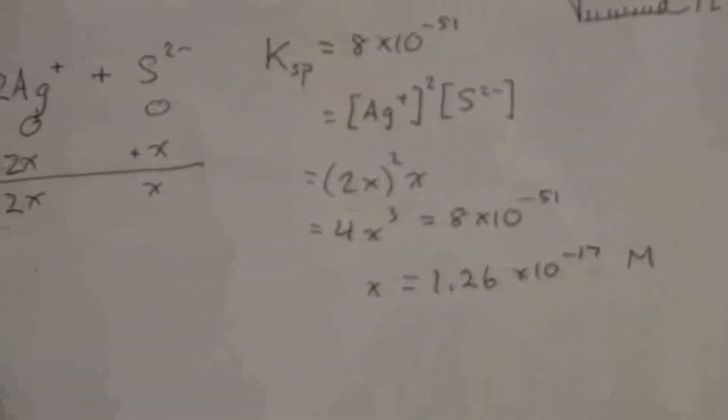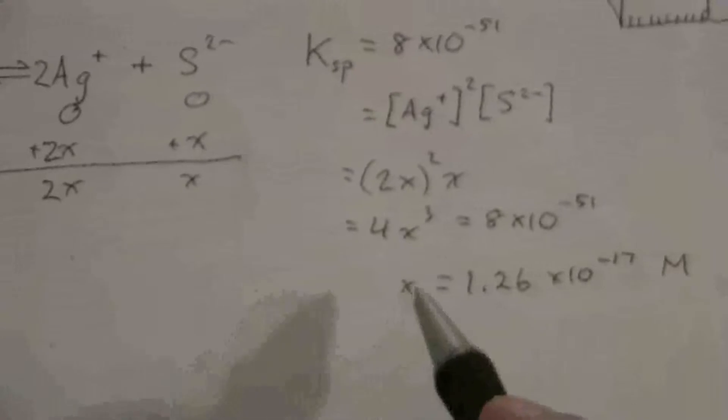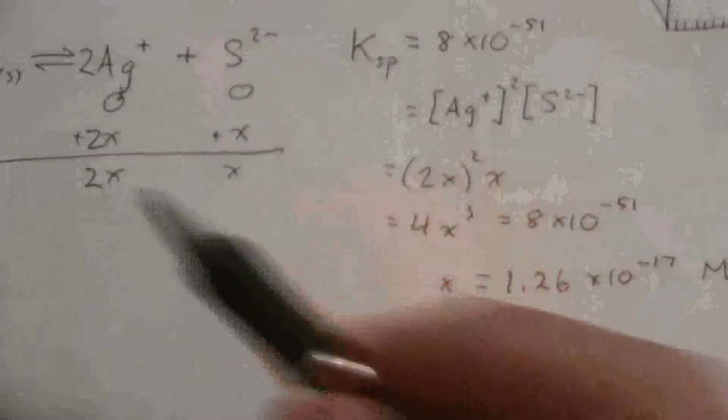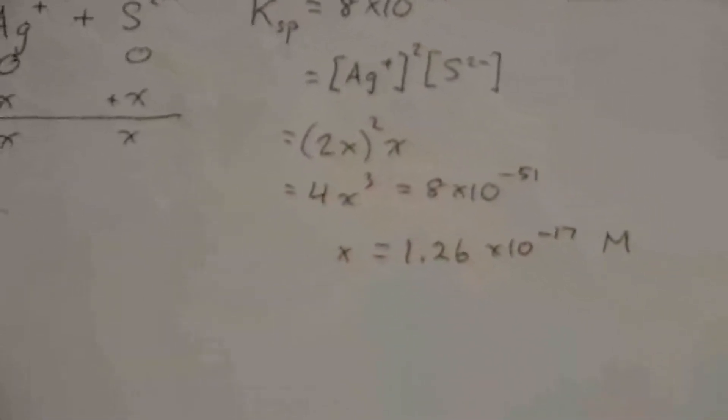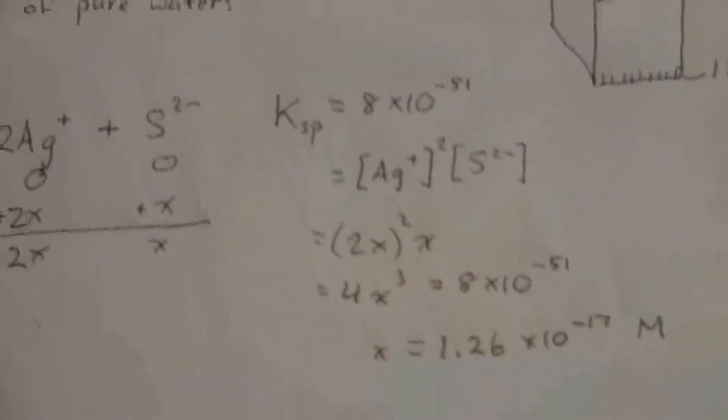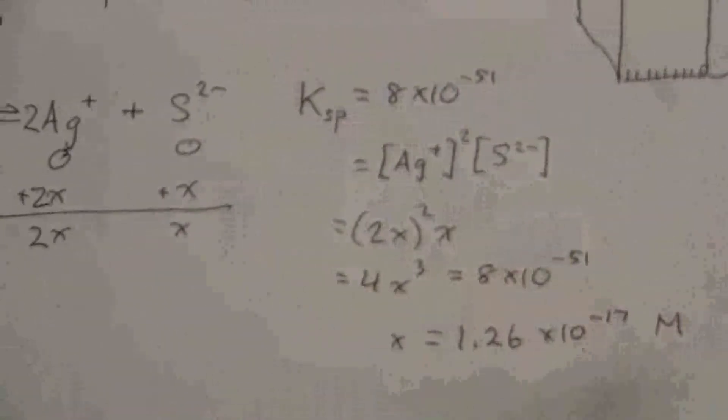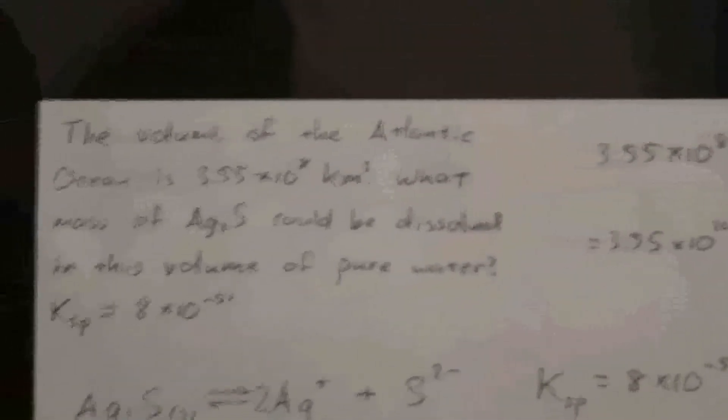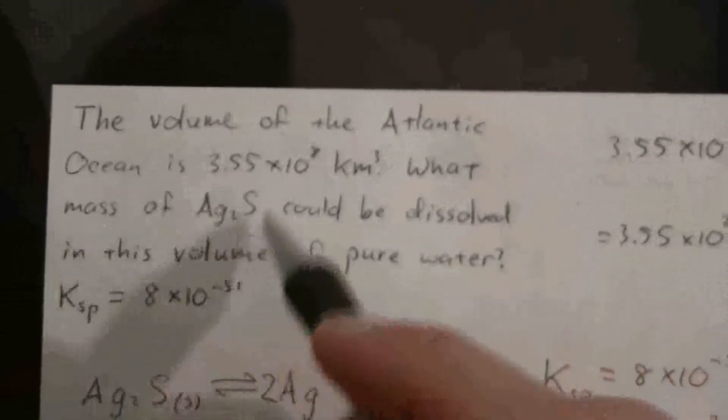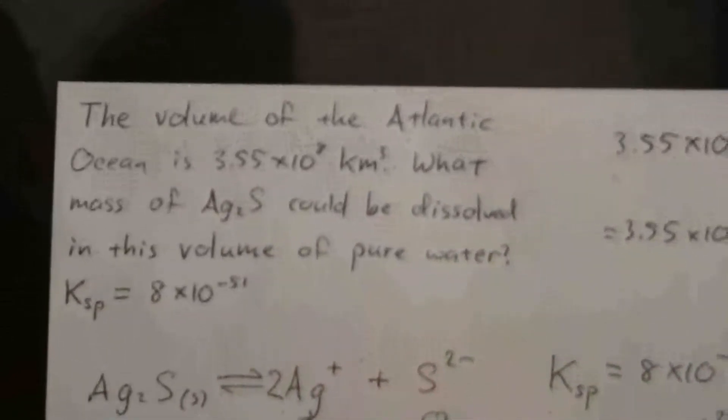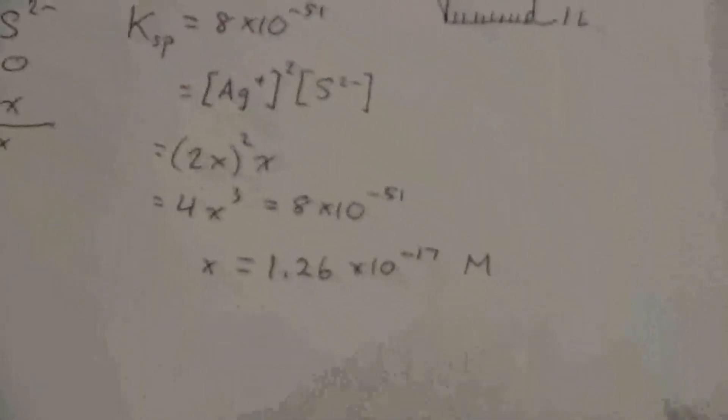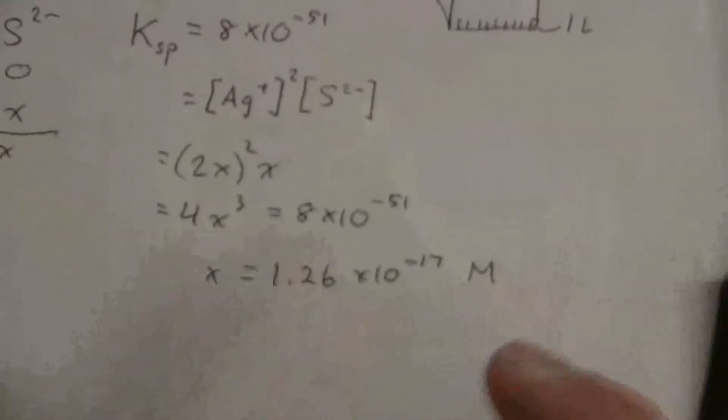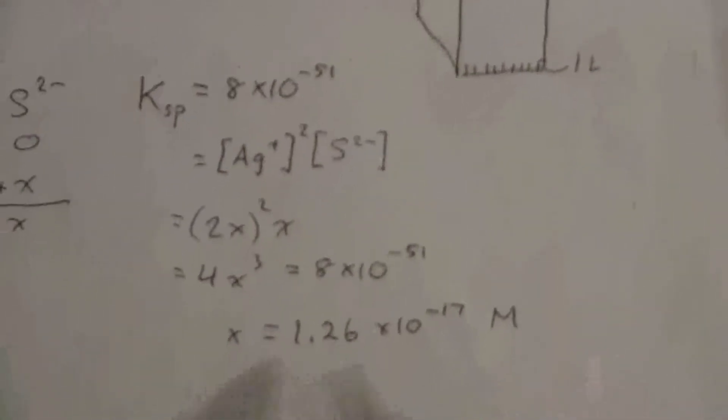That is my concentration of the sulfide ions. If we multiply that by 2 we would get the silver ion concentration. But what we want to find is the mass of this silver sulfide that can be dissolved. This is saying here's the concentration I can get it to - that would be the saturation concentration.